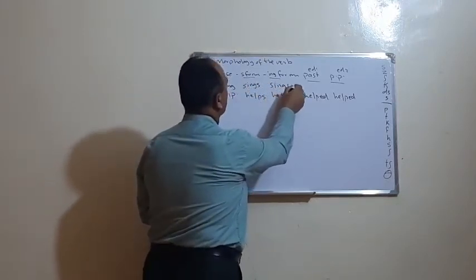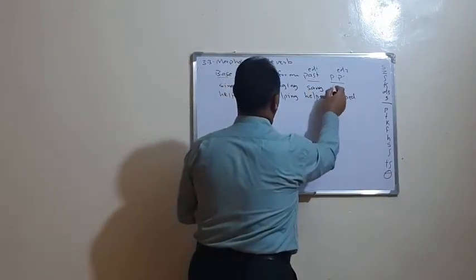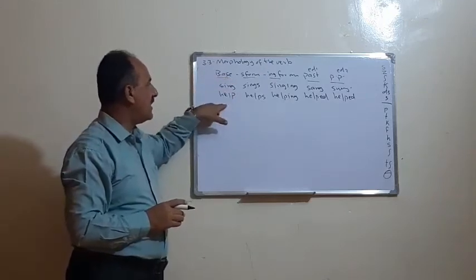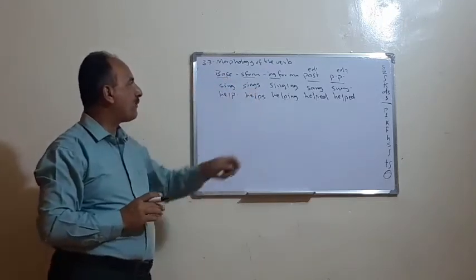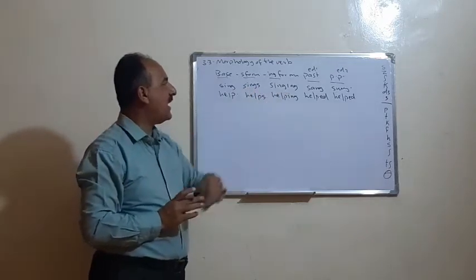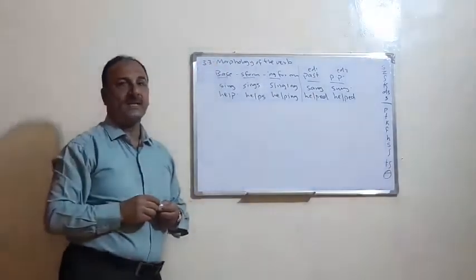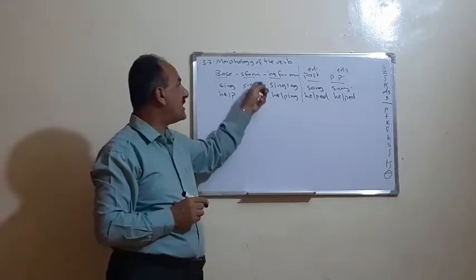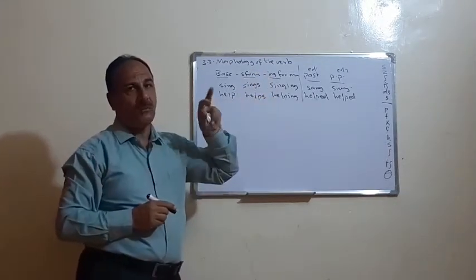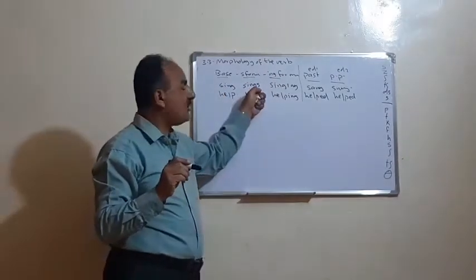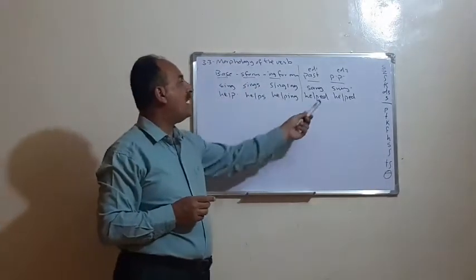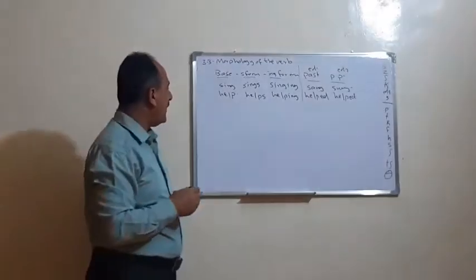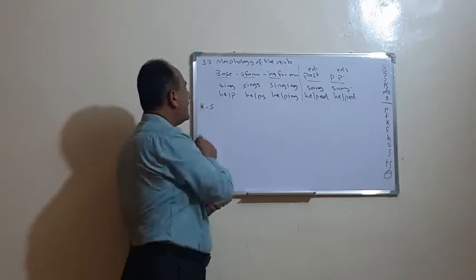The s-form and the ing-form are called predictable — according to the end of the verb, we add or modify the -s. The past and past participle are unpredictable, meaning we don't know how to change the verb in advance. Let's take some points concerning the s-form when we add -s to the verb.